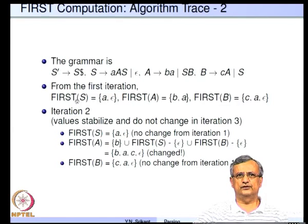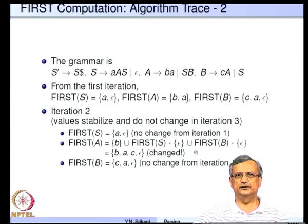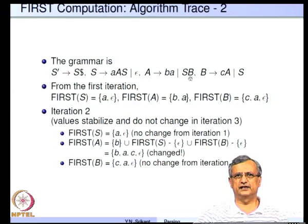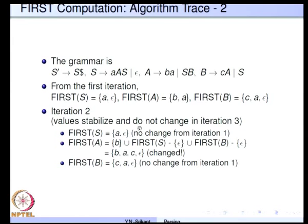In iteration 2, using the values First(S) = {a, ε}, First(A) = {b, a}, First(B) = {c, a, ε}: First(S) does not change. First(A) changes — since both S and B produce epsilon, we include First(S) minus epsilon, First(B) minus epsilon, and also epsilon itself, giving First(A) = {b, a, c, ε}. First(B) = {c, a, ε} has not changed. These values stabilize and do not change in iteration 3, so these are the final First sets.